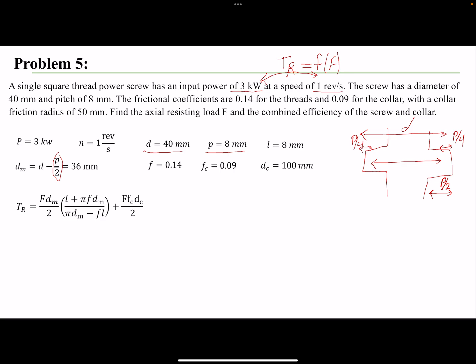Based on our equations, we need to find TR. If I have TR, then I can find F. But TR is not given directly—I have the power and RPM.